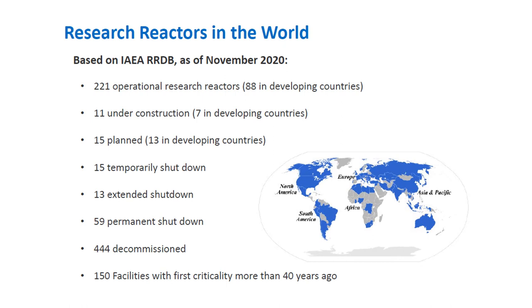Based on IAEA data as of November 2020, there are 221 operational research reactors, with 88 in developing countries. Eleven are under construction, 7 in developing countries. Fifteen are planned, 13 in developing countries. Fifteen are temporarily shutdown, including the PRR1. Thirteen are in extended shutdown. Fifty-nine are in permanent shutdown, and 444 are decommissioned. There are 150 facilities with first criticality more than 40 years ago.